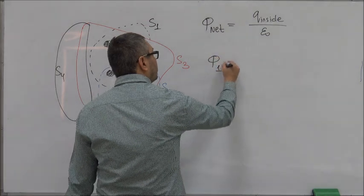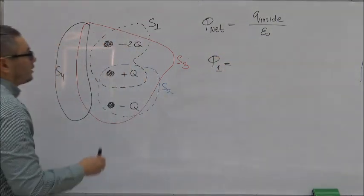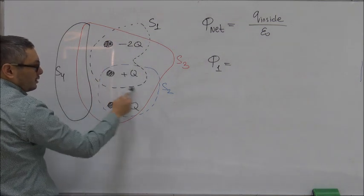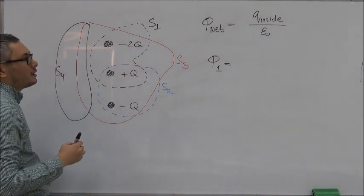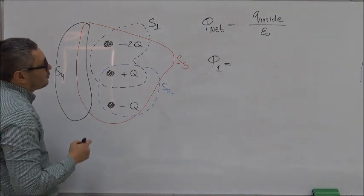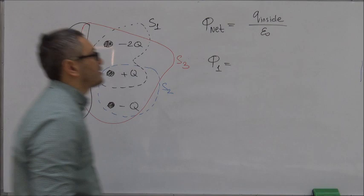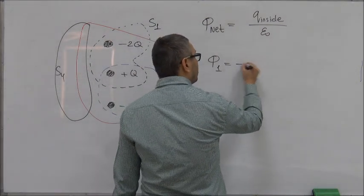Let's start with the first one, Φ₁. Looking at S1, this black dashed line, within the S1 surface we have two charges: -2q and +q, so the total is -q. Therefore, Φ₁ equals -q over epsilon-zero.